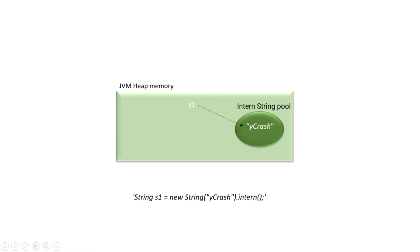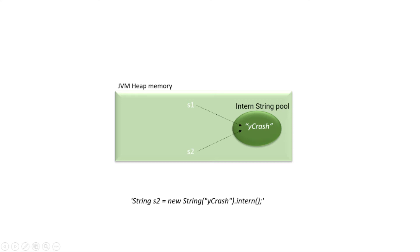Now looking at the next statement: string s2 equals new String of 'ycrash', invoking intern on it. When JVM is going to execute the second statement, it's going to check whether this 'ycrash' string is present in this intern pool. Yes, in this case it is present. Now the JVM will not create a new 'ycrash' string — rather, it's going to return back the same reference of the earlier 'ycrash' string. In this way, the duplicate strings are eliminated from the application.